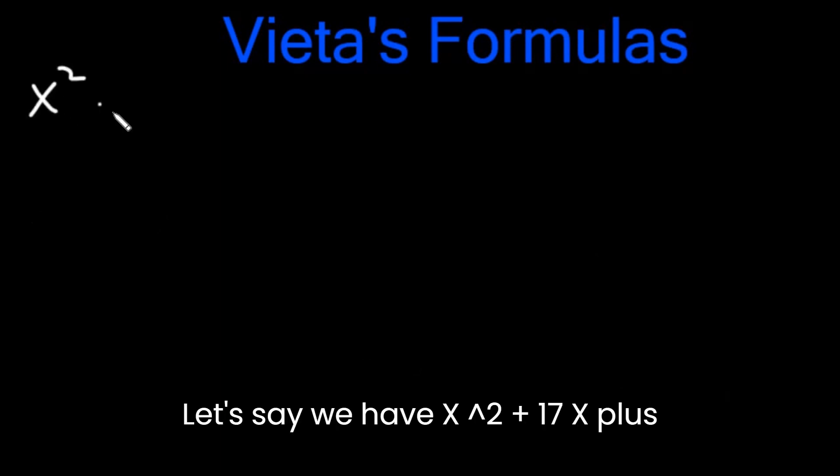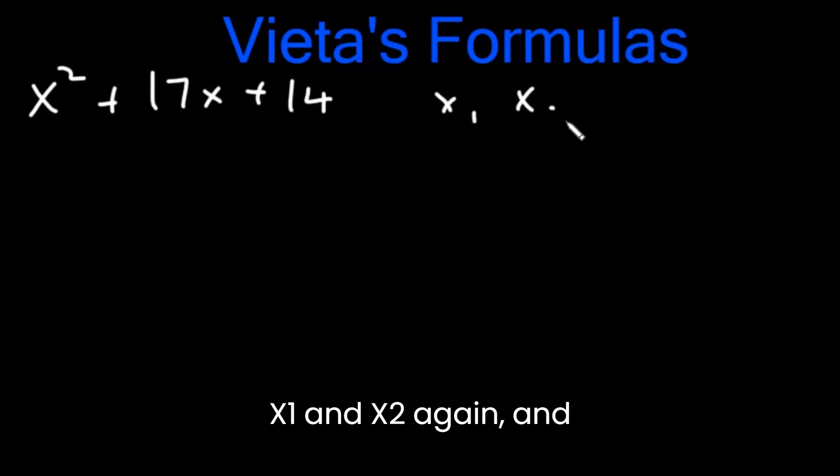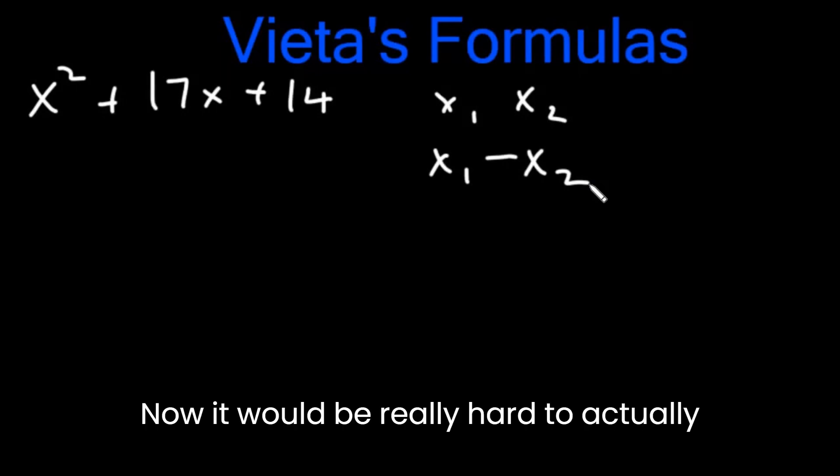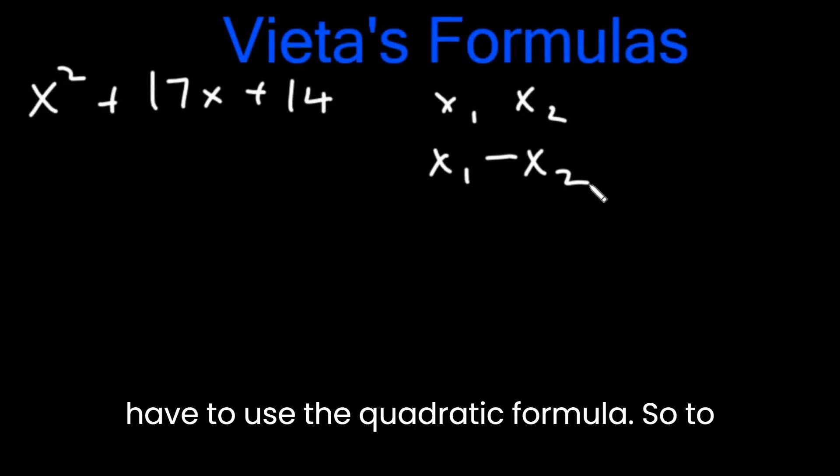Let's say we have x square plus 17x plus 14. And let's say we know that the roots are x1 and x2 again. And let's say we want to find x1 minus x2. It would be really hard to actually find the roots because we would have to use the quadratic formula. So to find x1 minus x2 we use the Vieta's formula.